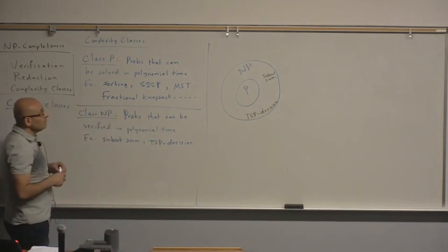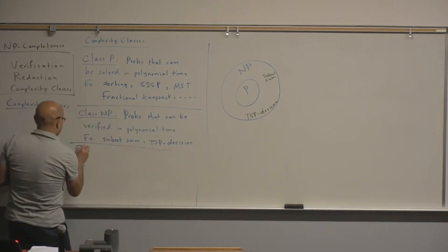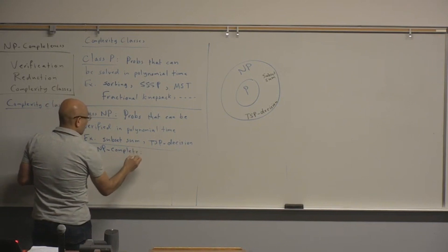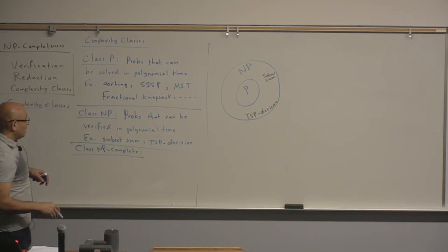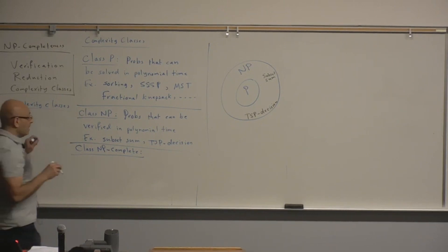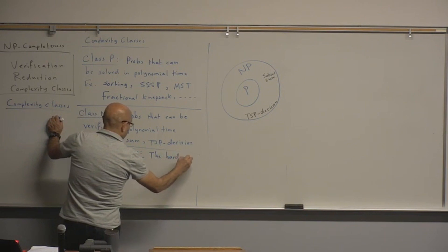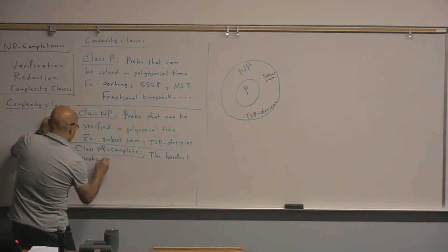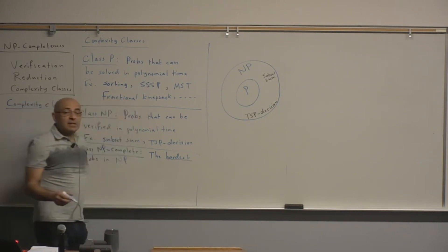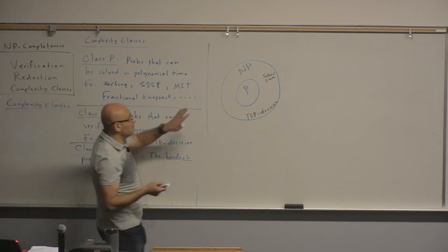The third class is class NP-complete. We are still defining these informally; later in this lecture we will define NP-completeness formally. But informally, these are the hardest problems in NP. By hardest, we mean that if we can solve one of them, we can solve all the problems in NP.